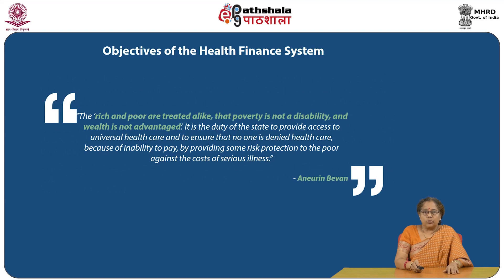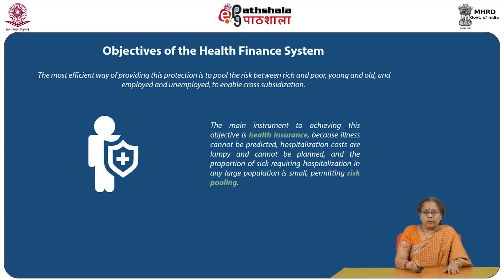Objectives of health financing system. To quote the famous words of Aneurin Bevan: the rich and poor are treated alike, poverty is not a disability and wealth is not an advantage. It is the duty of the state to provide access to universal health care and to ensure that no one is denied health care because of inability to pay, by providing some risk protection to the poor against the costs of serious illness. The most efficient way of providing this protection is to pool the risk between rich and poor, young and old, and employed and unemployed, to enable cross-subsidization. The main instrument to achieve this objective is health insurance, because illness cannot be predicted, hospitalization costs are lumpy and cannot be planned, and the proportion of sick requiring hospitalization in any large population is small, permitting risk pooling.